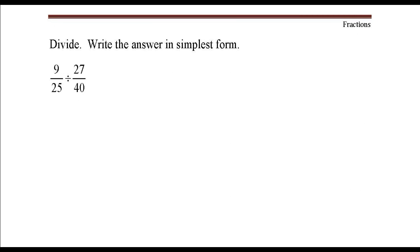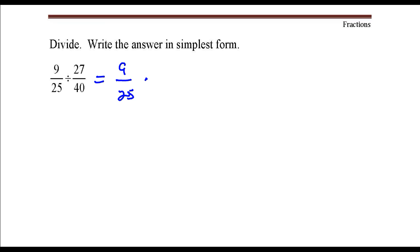I'm going to turn this division problem into a multiplication problem. Nine over twenty-five divided by twenty-seven over forty is the same thing as nine over twenty-five times the reciprocal of the second fraction, which would be forty over twenty-seven.